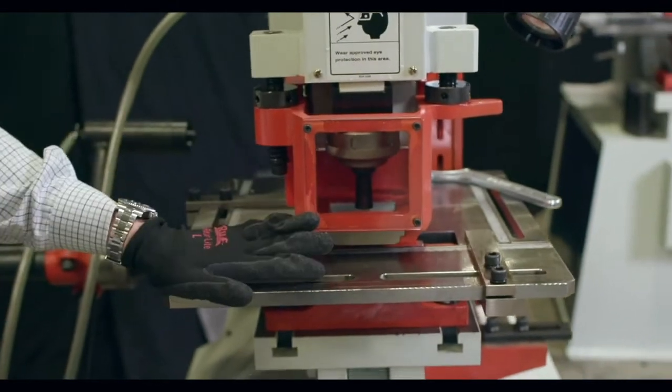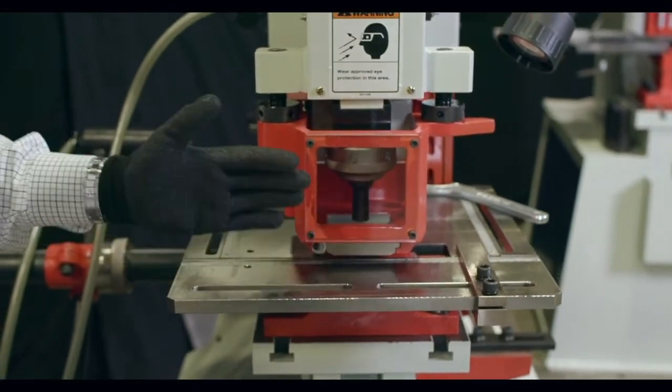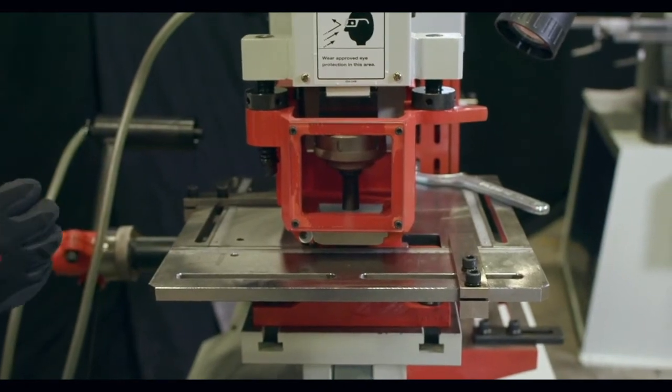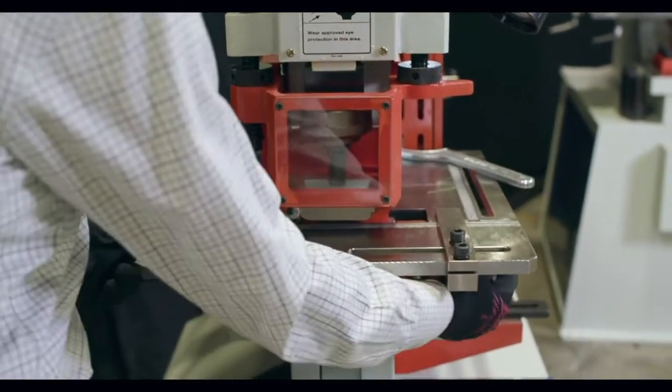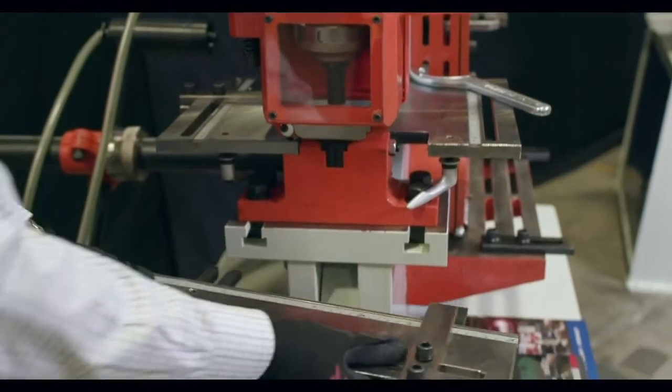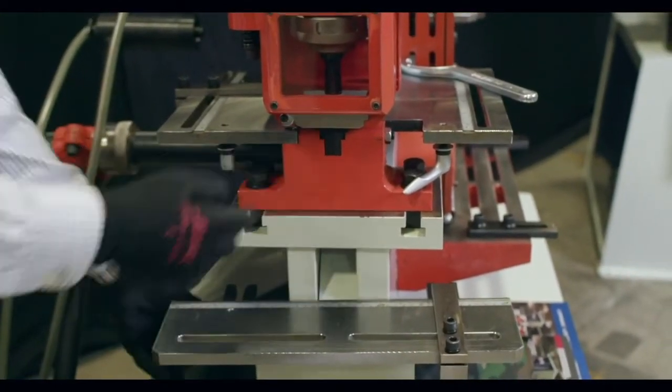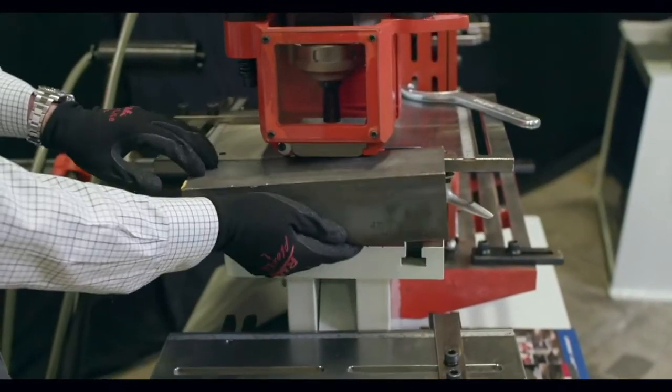On this machine, this is a 66-ton punch, up to an inch and a half standard capacity, up to four inches is optional. Front of the gauge table does remove. With our structural die block, that will allow you to put a piece of angle and punch leg down.